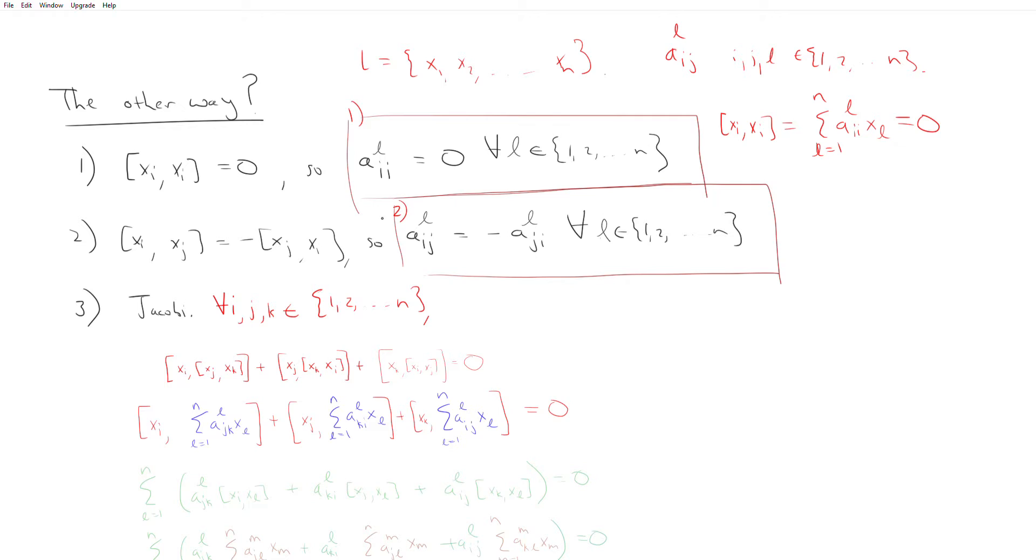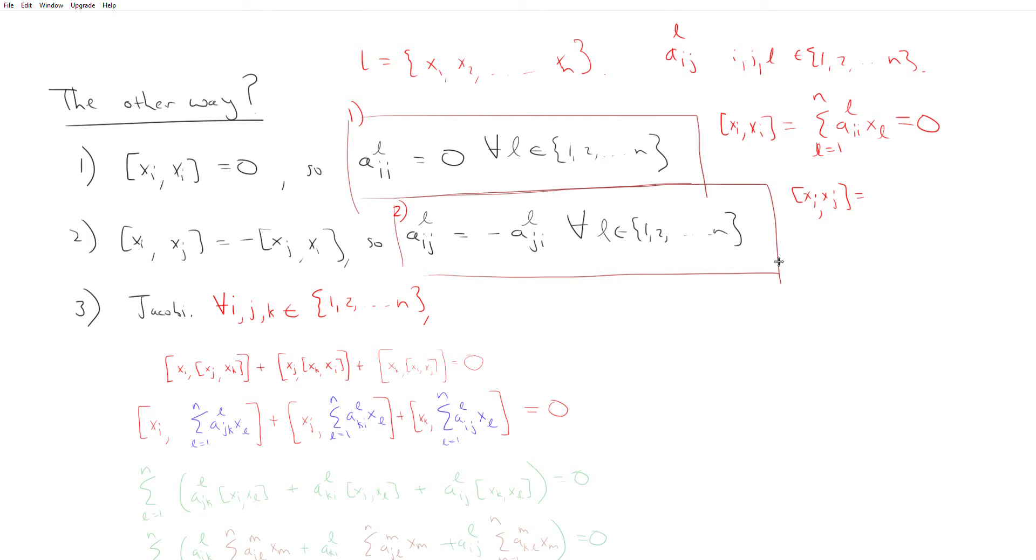The skew commutativity relation here that we know that follows from alternativity and bilinearity forces another condition. And so this can be seen very easily as well, which is if you have xi bracket xj, let me make some more space here,